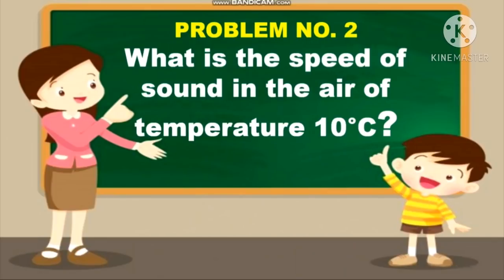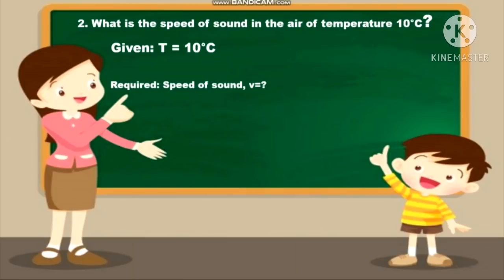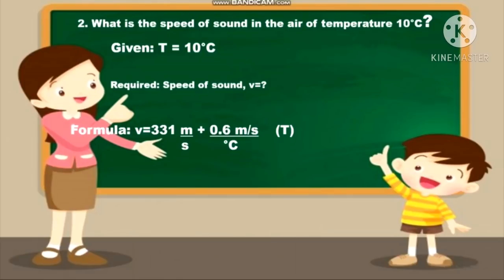One thing to keep in mind is that this formula finds the average speed of sound for any given temperature. The speed of sound is also affected by other factors such as humidity and air pressure. Now let's try another problem. The given temperature is 10 degrees Celsius, and what is being asked is the speed of sound. We use the same formula: 331 m/s plus 0.6 m/s per degree Celsius multiplied by T, substituting 10 degrees Celsius for T.